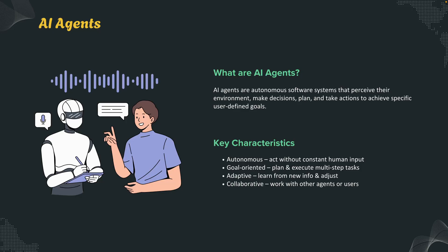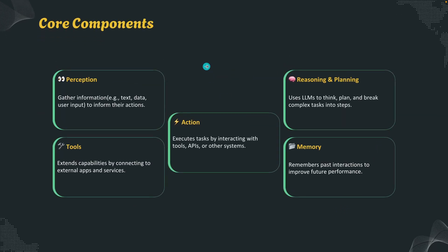Think of it like having a digital team that never sleeps. Now let's break down how they actually work. These are the five core components of any AI agent system. First is perception — they gather data from their environment, whether it's text data from an API, a database, or simple user input.